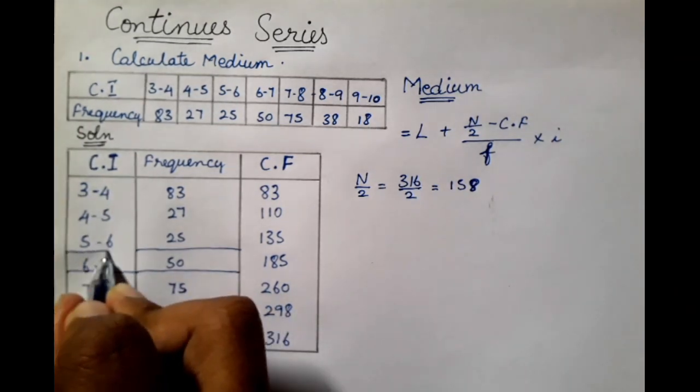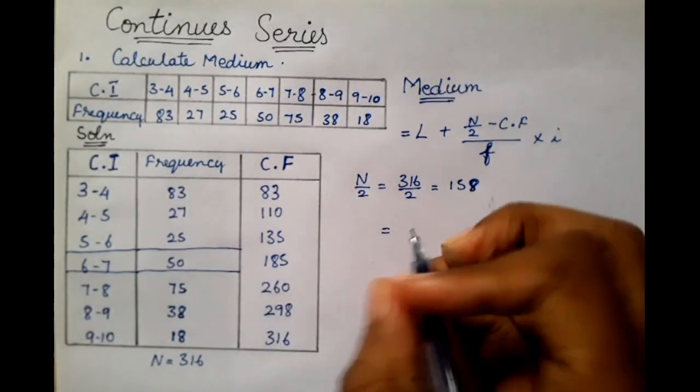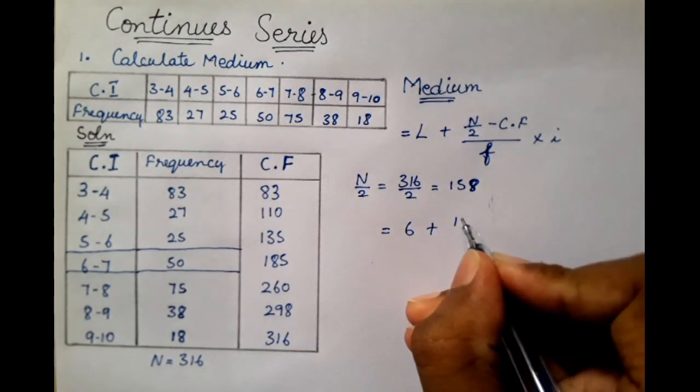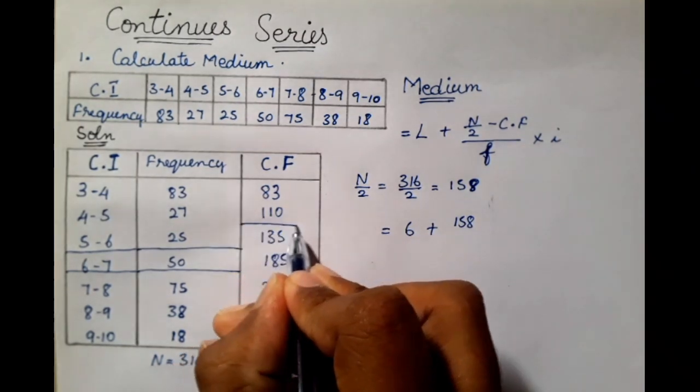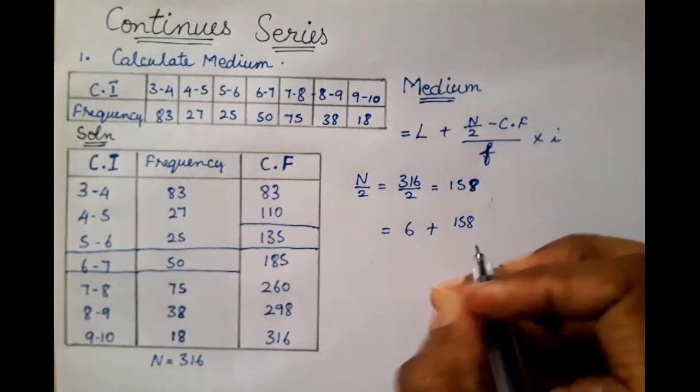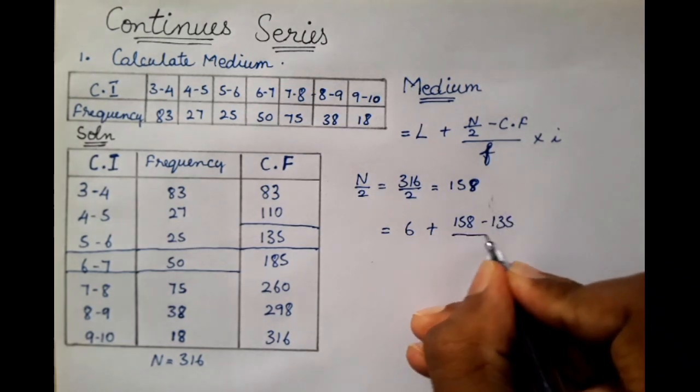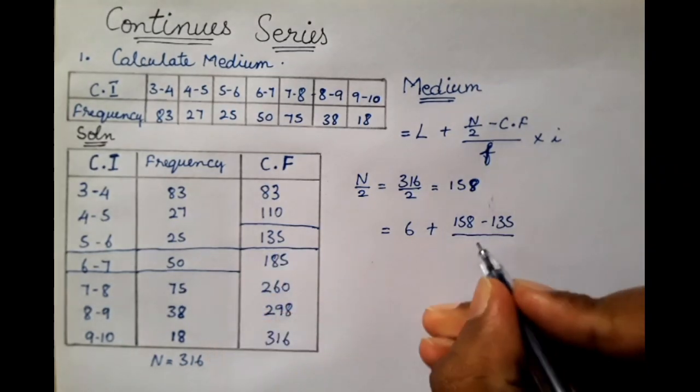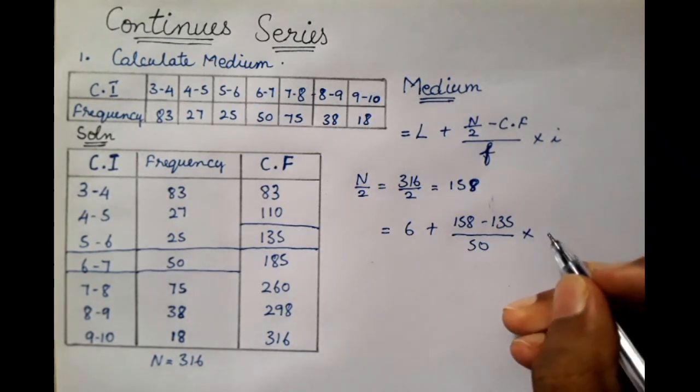Now we apply the formula. L is 6, plus N by 2 which is 158, minus CF which is 135, so 158 minus 135, divided by frequency which is 50, into I the length of the class interval.